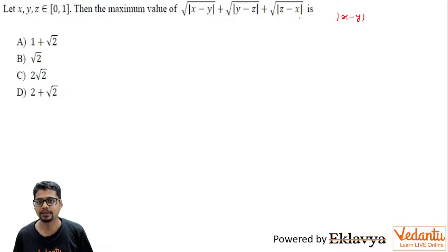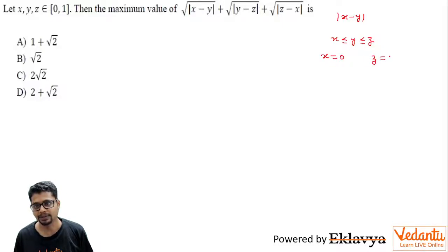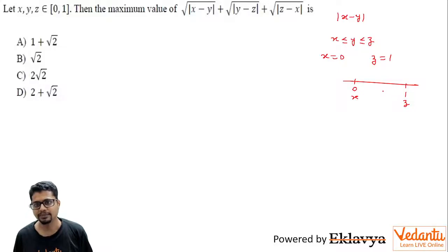Now, to maximize the value of this expression, without loss of generality let x ≤ y ≤ z. For the expression to be maximum, x should be the minimum possible, which is 0, and z should be the maximum possible, which is 1 — because |x−z| is the distance between x and z on the number line. And by symmetry, you should be able to say y should be half for the maximum possible value.